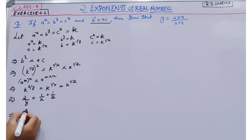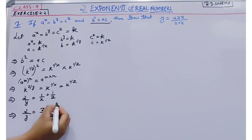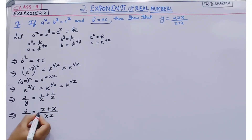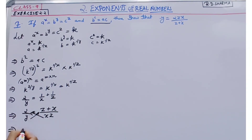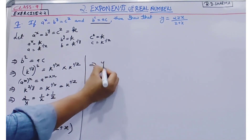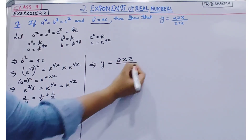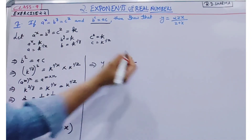Our next step is: 2 by y is equal to — taking LCM of x and z — z plus x, divided by xz. Now we cross multiply: 2xz is equal to y times (z plus x). So y is equal to 2xz divided by z plus x.